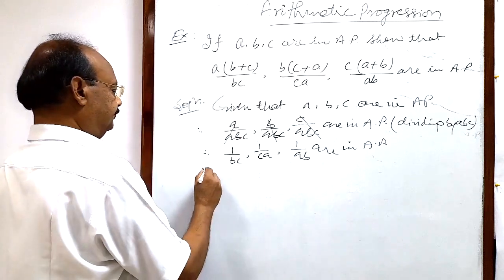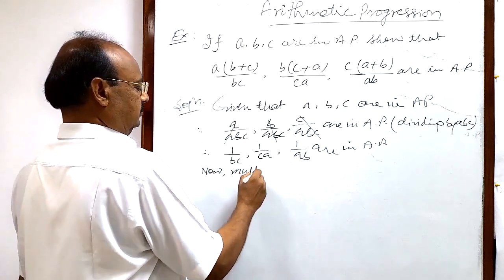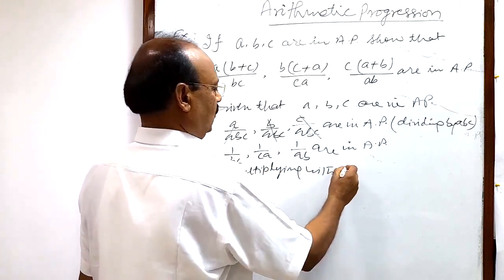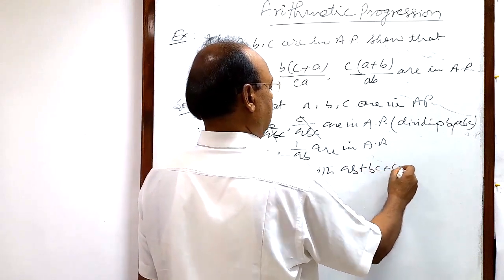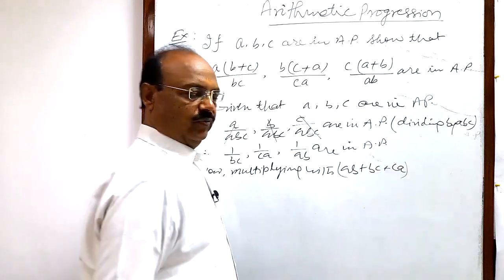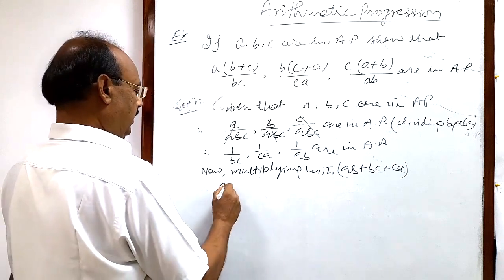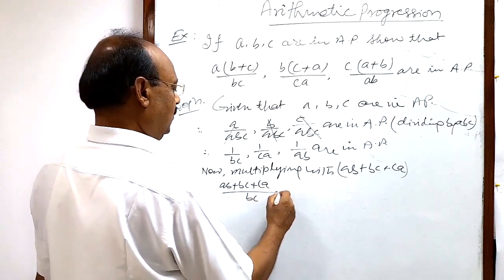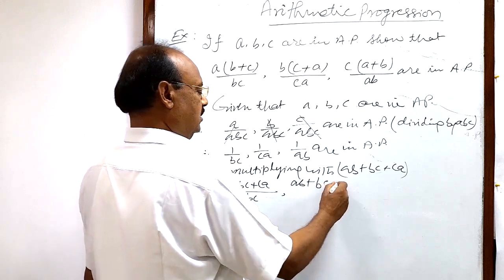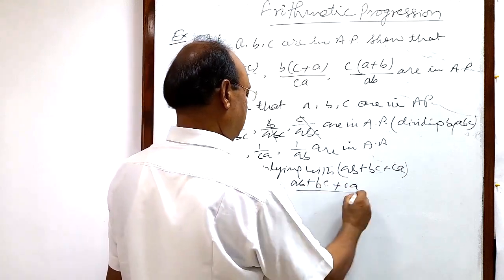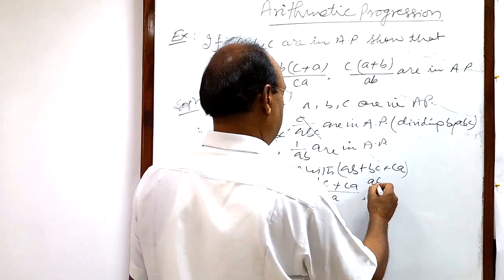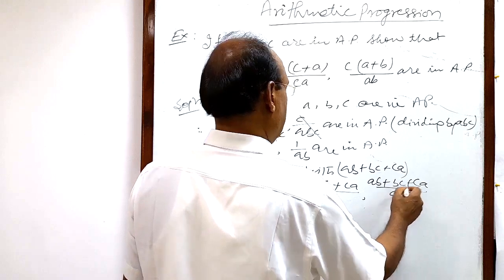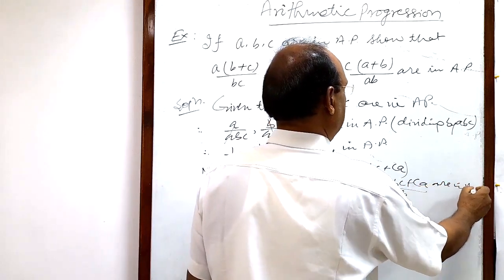Now we will multiply — multiplying with AB + BC + CA. So therefore we will get: (AB + BC + CA) upon BC, (AB + BC + CA) upon CA, and (AB + BC + CA) upon AB. These numbers are also in A.P.